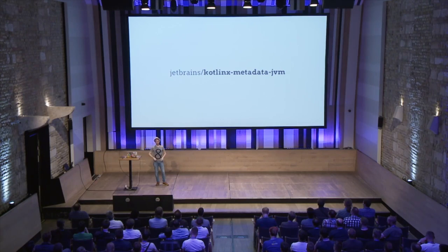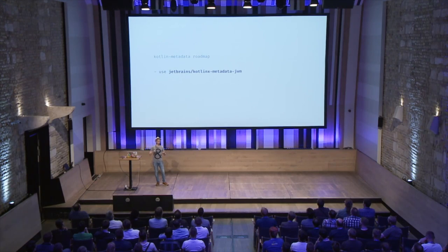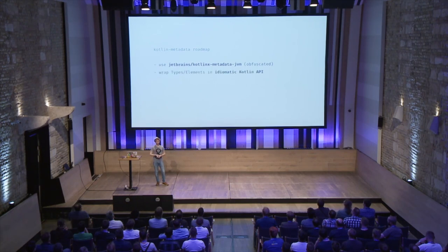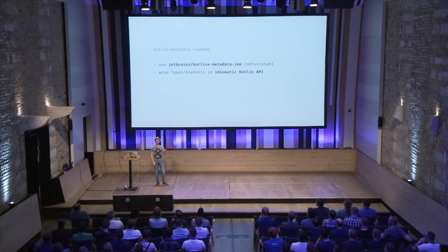So the library I created will always be focused on integrating this with the APT world. We are going to wrap types and elements — which are the Java API — in an idiomatic Kotlin API. Because one of the problems I had is that all the things you work with are still Java constructs: you never know if something is nullable or not, there are no sealed hierarchies, and it's often casting blindly without knowing if it's going to work. With this wrapping, it's going to make everything just so much easier.